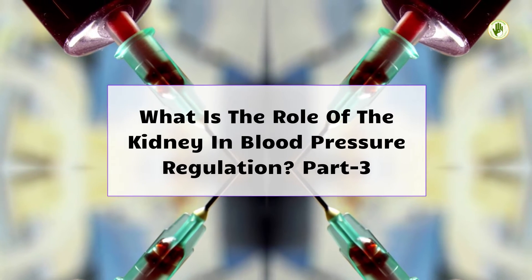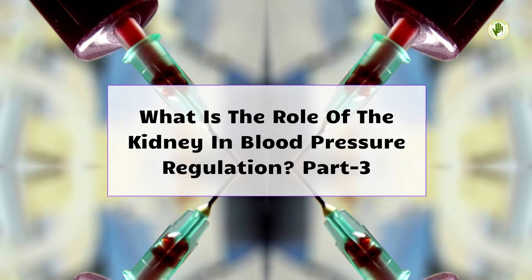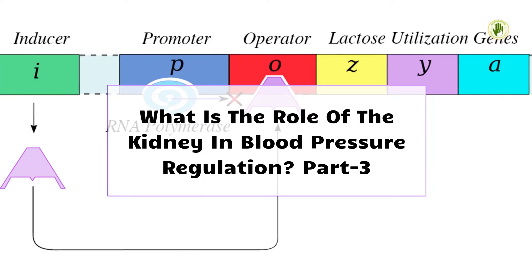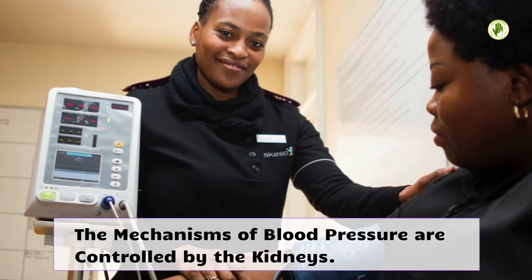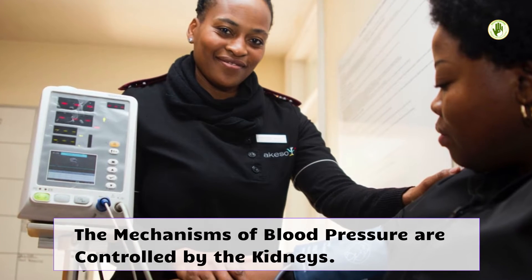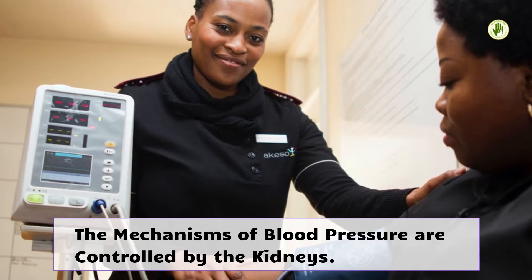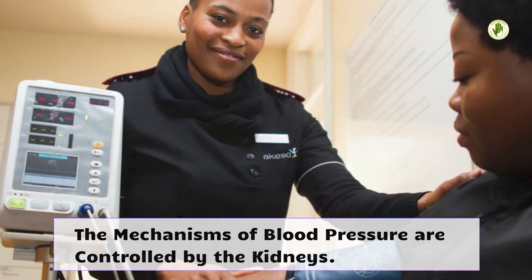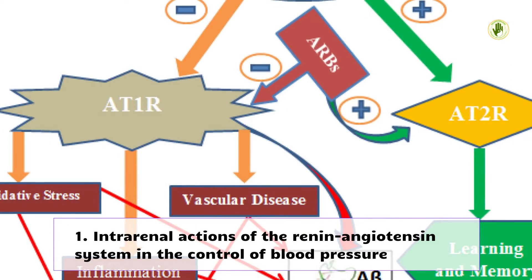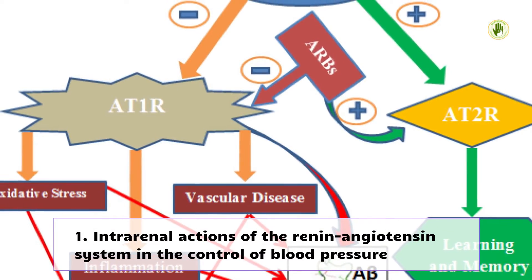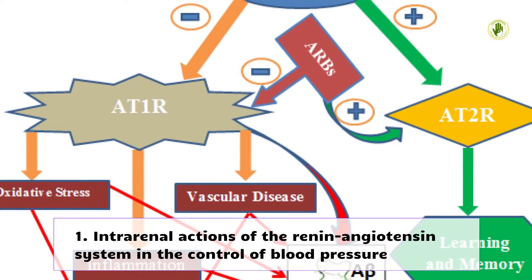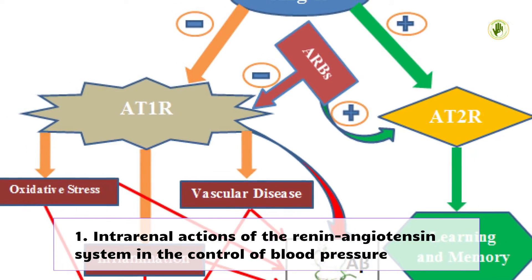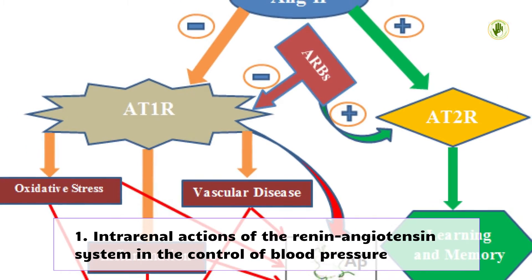What is the role of the kidney in blood pressure regulation? The mechanisms of blood pressure are controlled by the kidneys. Intrarenal actions of the renin-angiotensin system in the control of blood pressure.